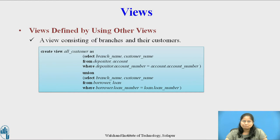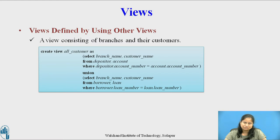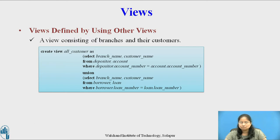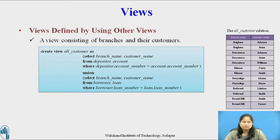Consider the view consisting of the branch name and the name of the customer who have either an account or a loan at that branch: CREATE VIEW all_customer AS SELECT branch_name, customer_name FROM depositor, account WHERE depositor.account_number = account.account_number UNION SELECT branch_name, customer_name FROM borrower, loan WHERE borrower.loan_number = loan.loan_number. The result of this view is the relation all_customer with the attributes branch_name and customer_name.